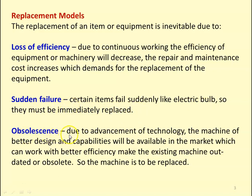The third reason is obsolescence. Due to advancement of technology, machines of better design and capability will be available in the market, which can work with better efficiency, making the existing machine outdated or obsolete. This is again applicable for mobile phones — due to the invention of newer technology, there will be more efficient machines available. For example, when CNC — computer numerical control machines and automated lathes entered the market, the old lathes and old machines became obsolete. So to sustain production and remain competitive in the market, we have to replace machines with advanced technology. These are the three important reasons for replacement of equipment.